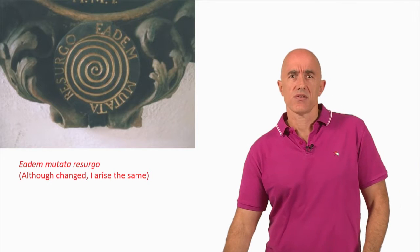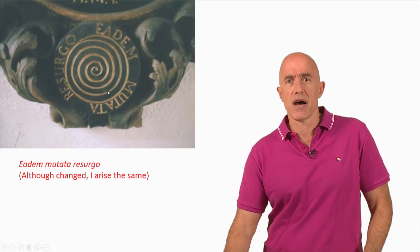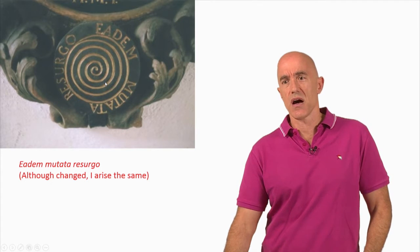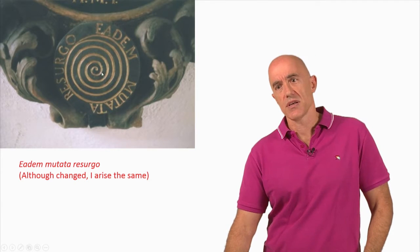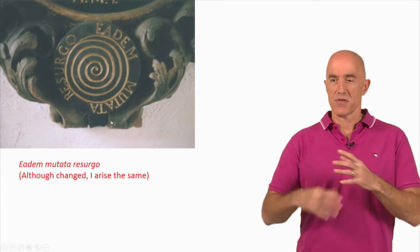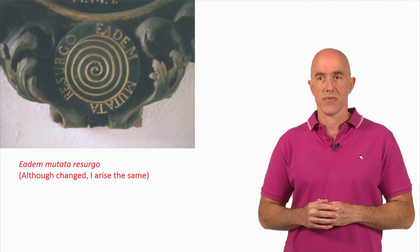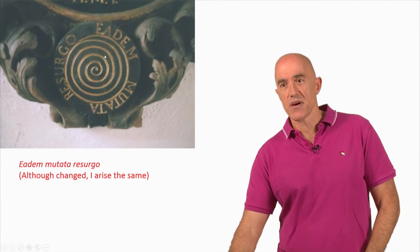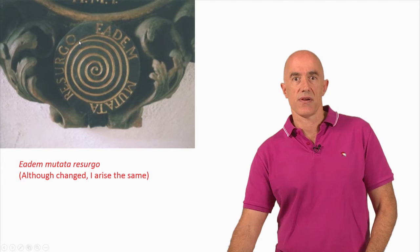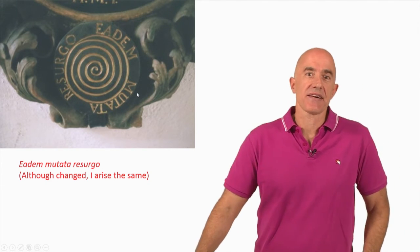Unfortunately, the stonemasons carved an Archimedean spiral at the bottom of his tombstone, not a logarithmic spiral. You can see how the spacing here is constant, while for a logarithmic spiral the spacing should increase by some common factor. There's also a bit of error at the end where the spiral seems to come back together. I guess a dead man can't complain.